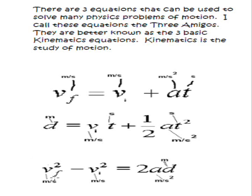And our last amigo here says that if you square the final speed and subtract the initial speed from it, that is equal to twice the acceleration times the distance. So again, all the units are the same here. No new symbols there.